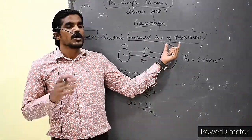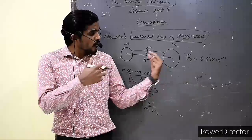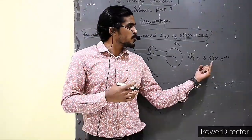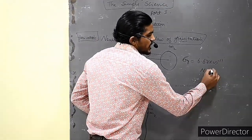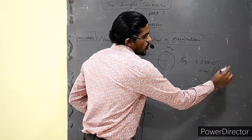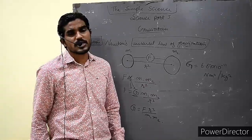That force is known as universal gravitational force. And the force between board and me is 6.67 into 10 raise to minus 11, and its unit is Newton meter square per kg square.